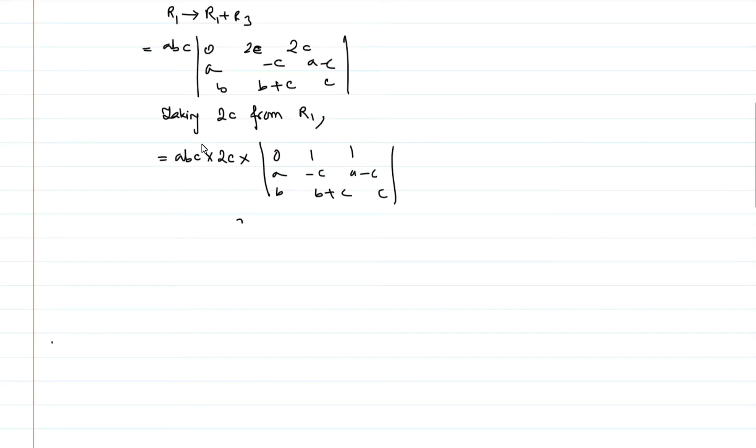Now we just make it zero so that it is in its simplest form. So we do c2 to c2 minus c3, and that will be giving us 2abc². And this will be 0, 0, 1, a-c, a-c, b, b, c. Now we got nothing to do except expanding it.